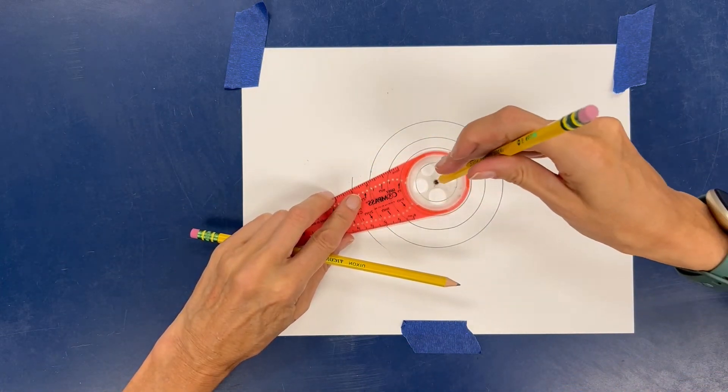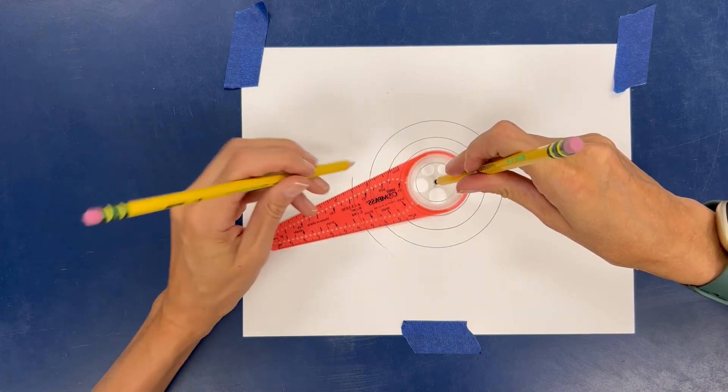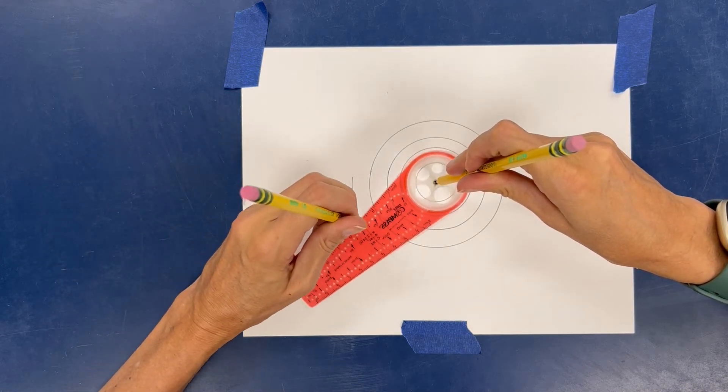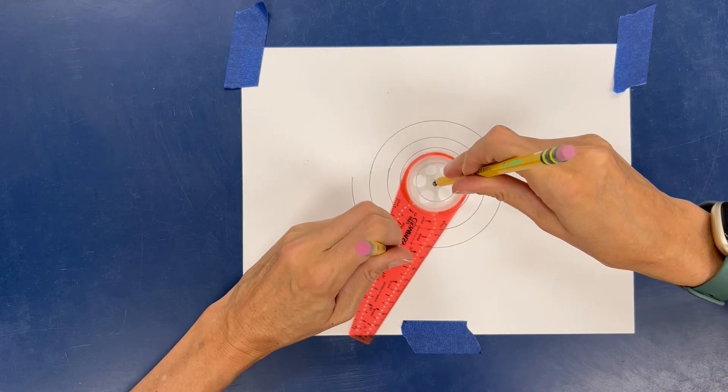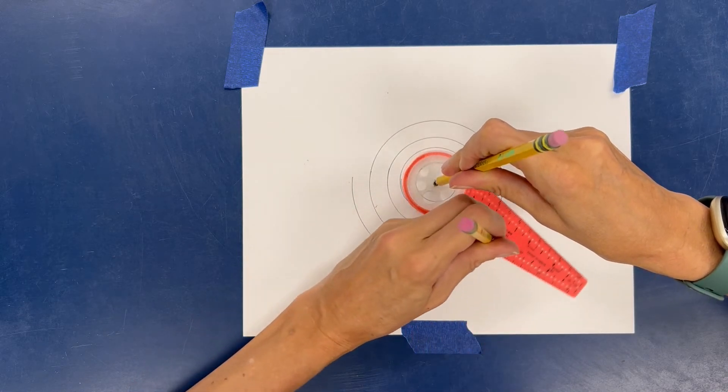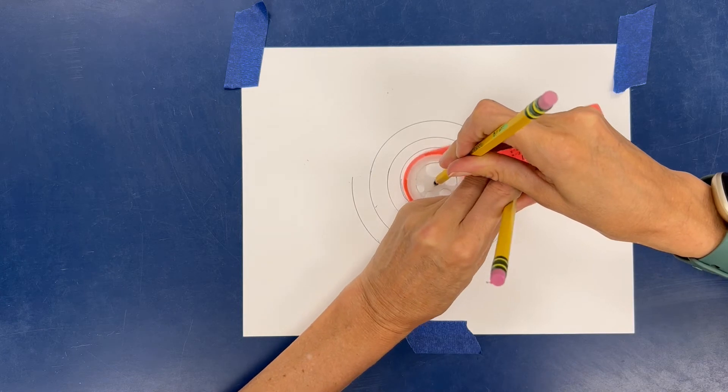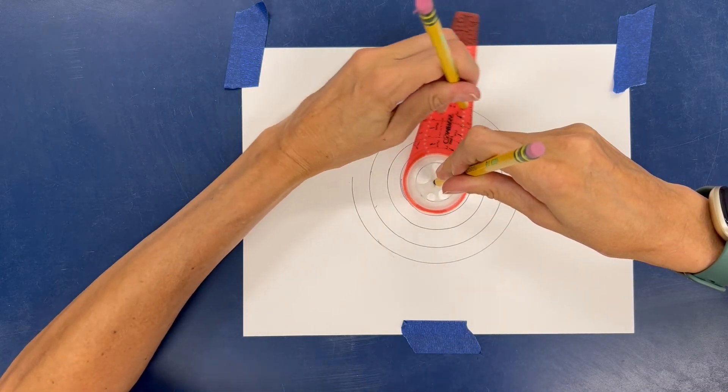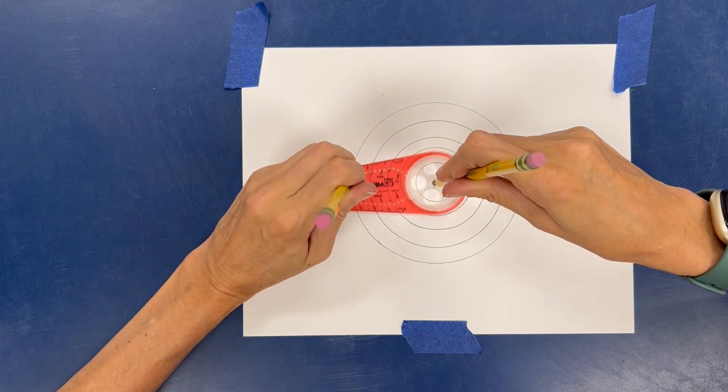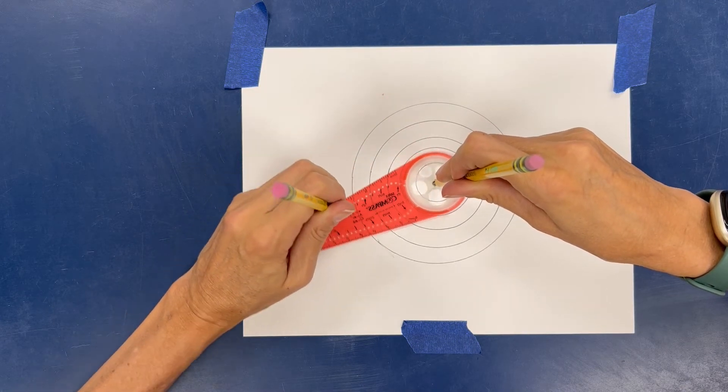I just need to figure out what dot I was using. Let's see. Which one? Must be this one. Okay. It's tough to keep it still. Go around. Move your pencil as needed to the other side. And there you have a bunch of concentric circles.